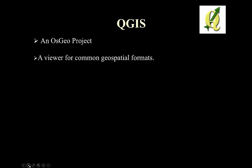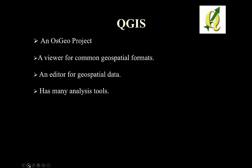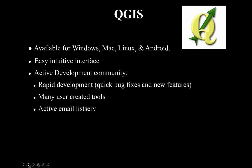We're going to talk about QGIS, which is an OSGeo project — meaning it has been incubated underneath the OSGeo umbrella. To be included as an OSGeo project, a FOSS4G project has to meet certain requirements in terms of its documentation, website, and interoperability with other software. QGIS is a viewer for common geospatial formats, an editor for geospatial data, and has many analysis capabilities. It's available for Windows, Mac, Linux, and even Android.